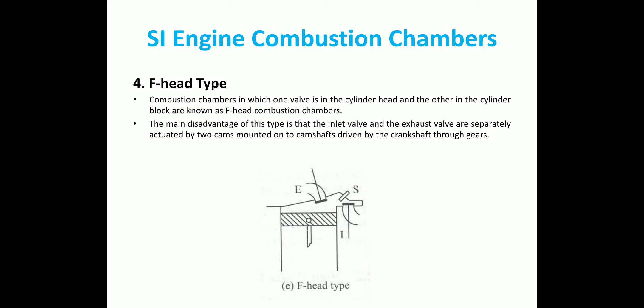And the last one is the F-head type combustion chamber. In this type, the exhaust valve is located in the cylinder head and inlet valve is located in the cylinder block. The main disadvantage of this type is that two camshafts are to be used separately to activate the inlet and exhaust valve. So these are the four different designs of SI engine combustion chamber. Hope you all understood the concepts. Also, the figures are also very important. Thank you.